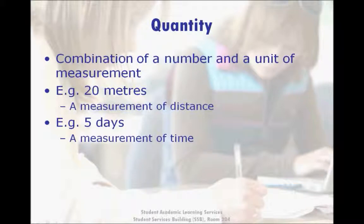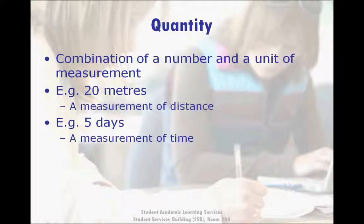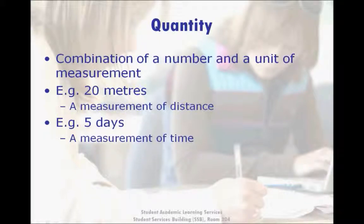For example, five is not a quantity unless I tell you what it is five of. If it was five people, five apples, or five kilometers of distance, then that would mean something. A number itself is an abstract concept that doesn't have any practical meaning, but when you combine a number with a unit of measurement you get something concrete that can be understood in the real world.